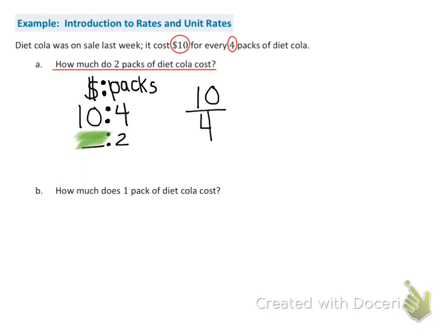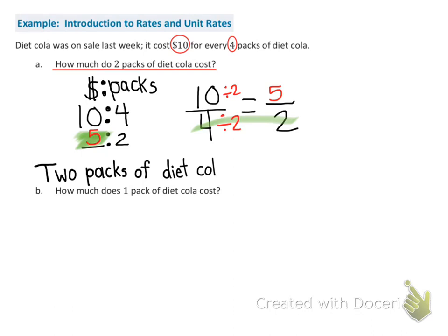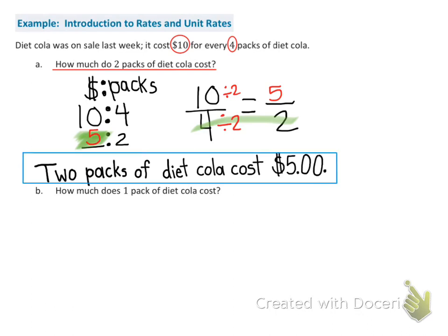How much would 2 packs cost? I'm going to rewrite it as a fraction: 10 to 4. I know that we're going from 4 packs to 2 packs, and I know that I can divide 4 by 2 to get 2. In math, we use a constant number — my constant number is 2. So if I divide 4 by 2, I need to divide 10 by 2, and that gives me 5. I can conclude that 2 packs of Diet Cola cost $5.